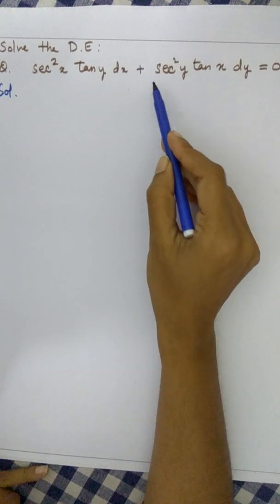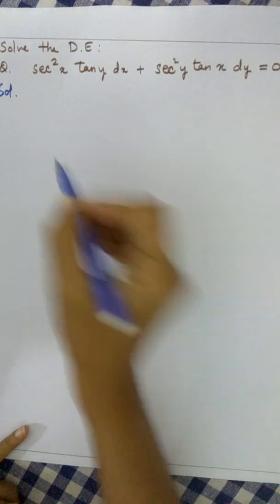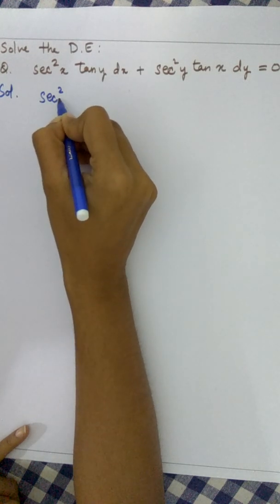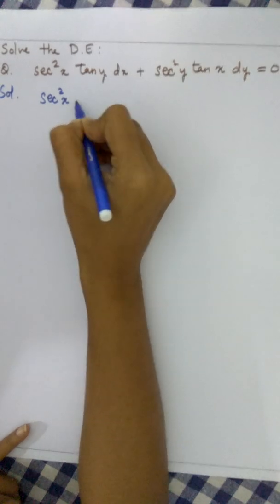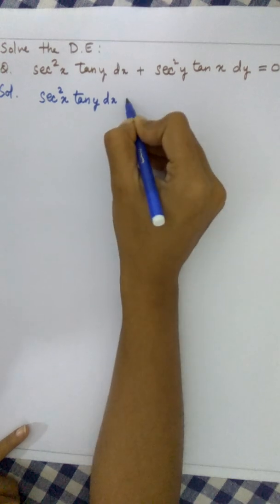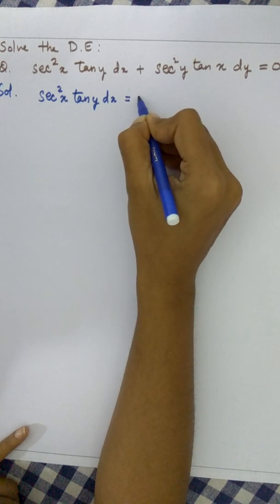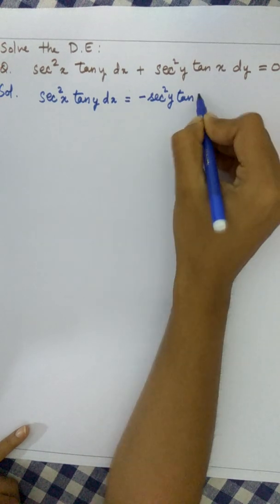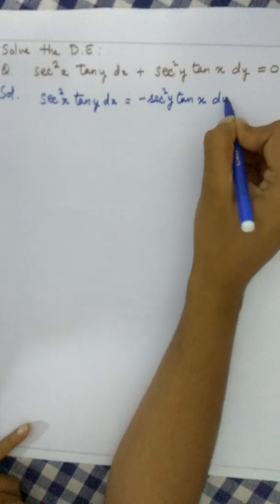To do that, let's take this term to the right-hand side of the equation. We get sec²x tan y dx equals minus sec²y tan x dy.